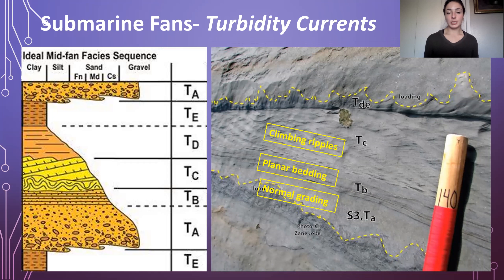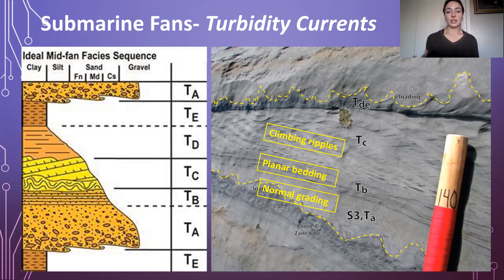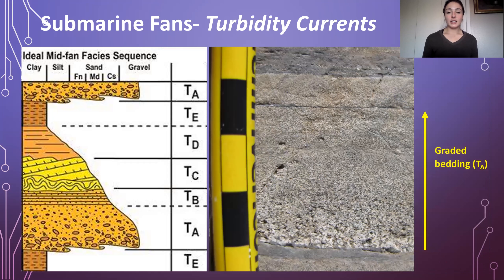Here's another real-life example of a preserved Bouma sequence. We have at least a little Ta with coarser sand and possibly some gravel showing normal grading, then Tb with finer grains exhibiting planar bedding, then beautiful climbing ripples in the Tc section, and a Td/Te section at the top. Essentially we have a clear Ta, Tb, and Tc preserved in this outcrop.